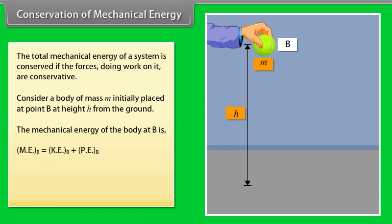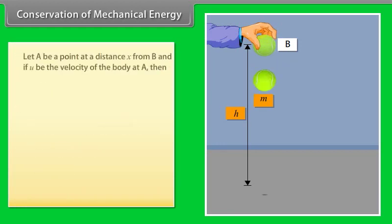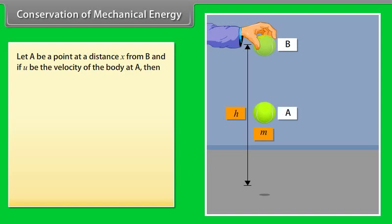Mechanical energy of the body at B is equal to kinetic energy of the body at B plus potential energy of a body at B is equal to 0 plus mgh, is equal to mgh.